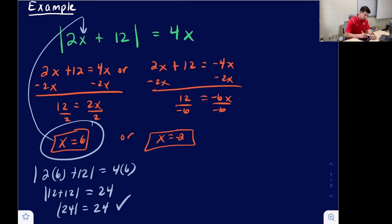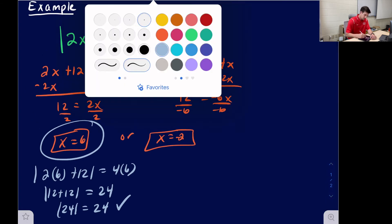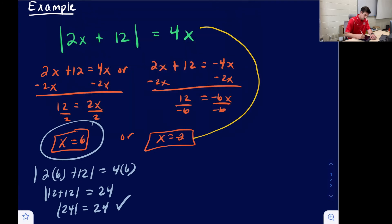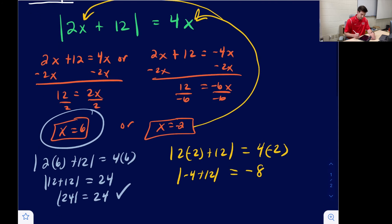So now let's check our other solution. We have negative 2. So let's take negative 2 and plug it in for this x and for the other x. So we have absolute value of 2 times negative 2 plus 12 equals 4 times negative 2. So over here we get negative 4 plus 12 inside the absolute value, and out here we get negative 8. So already we can see an absolute value equal to a negative number. Can't happen. So this ends up being absolute value of 8 equals negative 8, and we know that would not be true. So we would say that negative 2 is an extraneous solution, and we would not accept it.